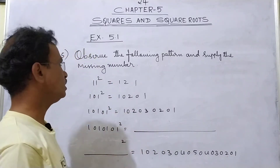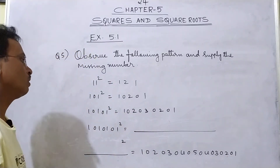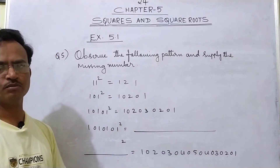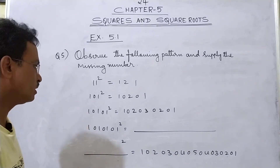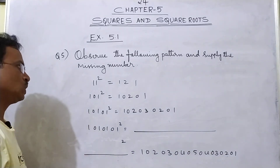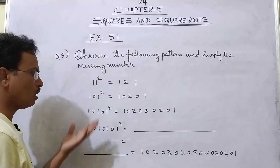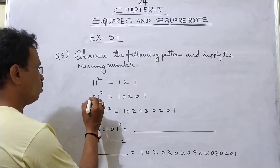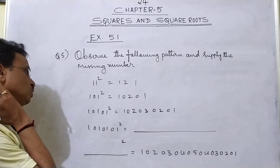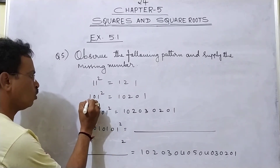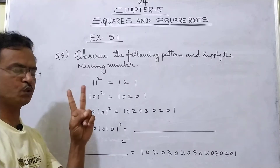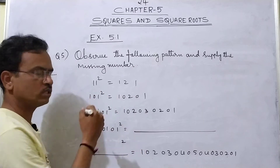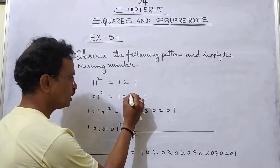By using this pattern, you have to find the missing digits or missing number. First, you have to think about how the pattern is given. Now see here 101 squared — how many ones are given? 2 ones are given. So first you write 1, then 0, then you write 2.